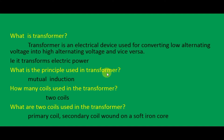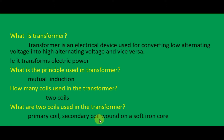Next question: what is the principle used in a transformer? The transformer works on the basis of mutual induction. How many coils are used in the transformer? The transformer consists of two coils. What are the two coils? The first one is the primary coil and the next one is the secondary coil. These two coils are wound on a soft iron core.